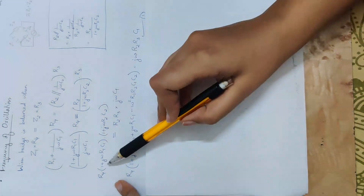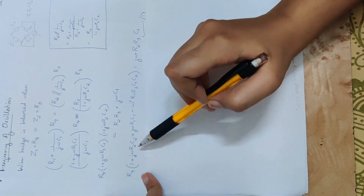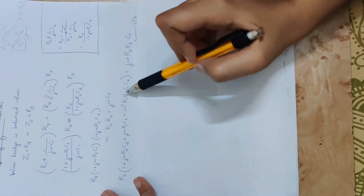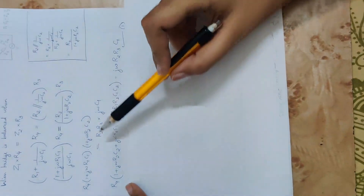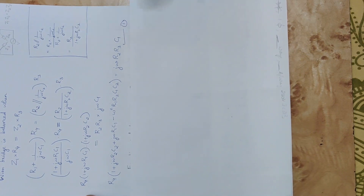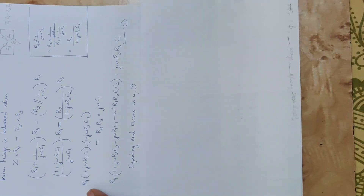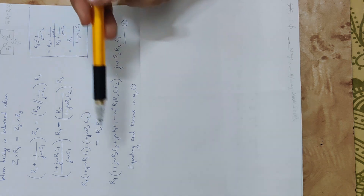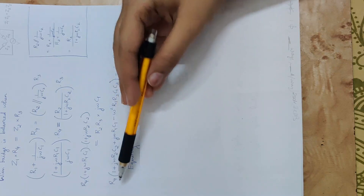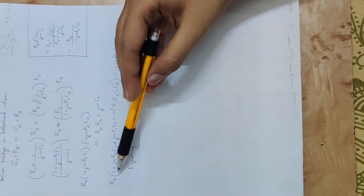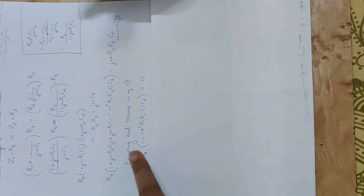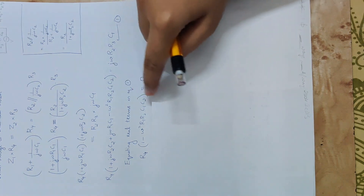Expanding the left-hand side gives four terms into R4 equal to the right-hand side term. Equating real terms: on the right-hand side there is no real term, so the real part is zero. On the left-hand side, the real number gives R4 × (1 − ω²R1R2C1C2) = 0.